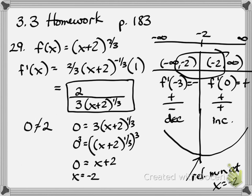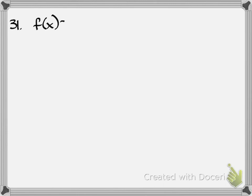Next, problem 31. F of x equals 5 minus the absolute value of (x minus 5). I just checked my notes and I wrote to omit 31, but I did not put it on the assignment sheet — I'm sorry. We have not learned how to take a derivative of absolute value yet; that's a rule we'll cover in a later chapter. So I meant to omit that one.